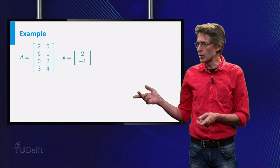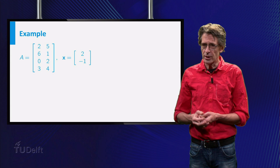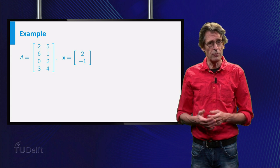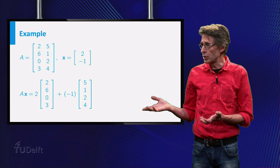Look at the example on the slide. The matrix A has two columns, the vector x has two entries, so the product is well defined, and the result is the vector as shown.